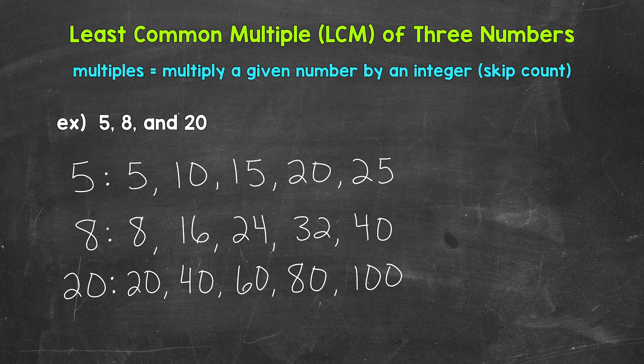Now that we have some multiples listed for each number, we can look for common multiples, and specifically the least common multiple, so the smallest multiple in value that they all share. But as of right now, we do not have any multiples that all three of these numbers share. So we need to continue our lists. Now as far as our lists of multiples, for the multiples of 20 we are at 100. For the multiples of 8, we are at 40. For the multiples of 5, we're only at 25. So let's extend the list of multiples of 5.